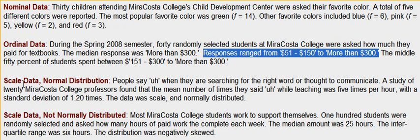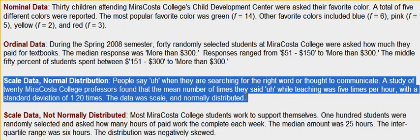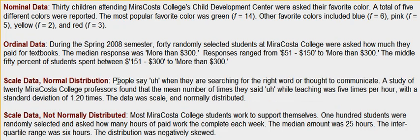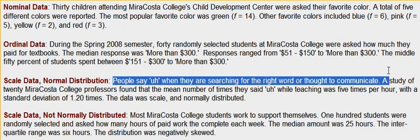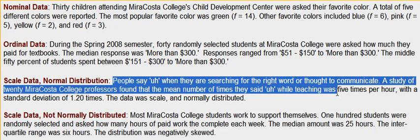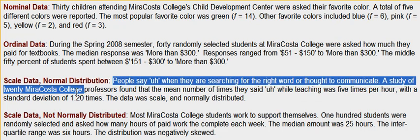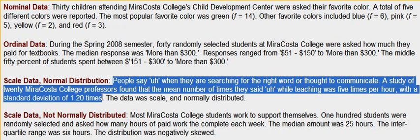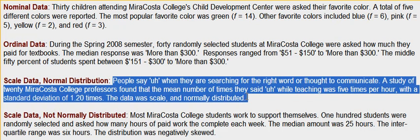For scale data that's normally distributed, you're going to provide the mean and standard deviation. A study of 20 MiraCosta College professors found the mean number of times they said 'uh' while teaching was five times per hour, with a standard deviation of 1.2 times. The data was scale and normally distributed.